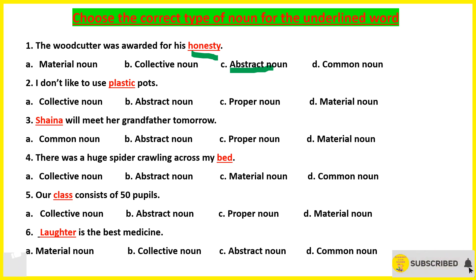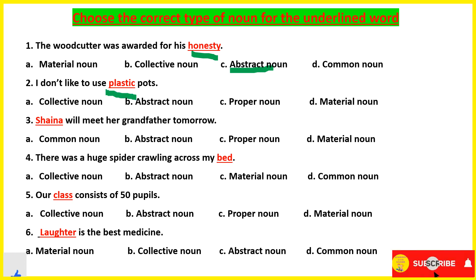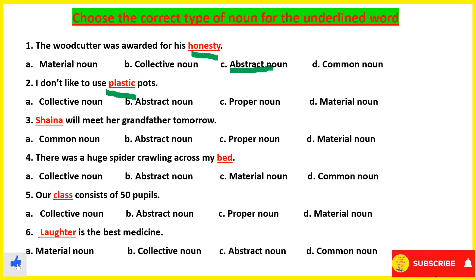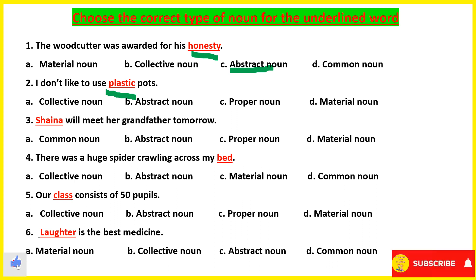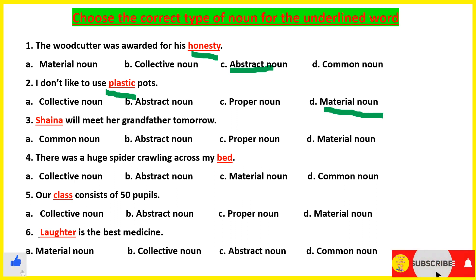Coming to the second question: 'I don't like to use plastic pots.' Plastic is the name of a material out of which many things are made, like pots, buckets, and cups. So that will be material noun.